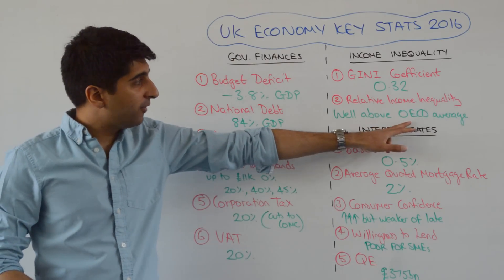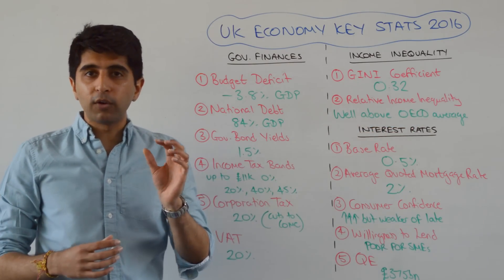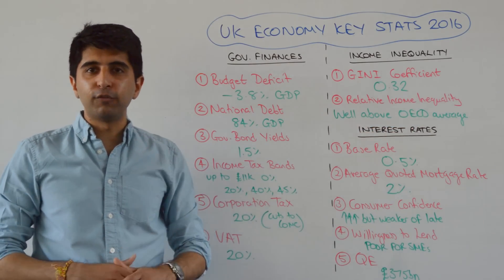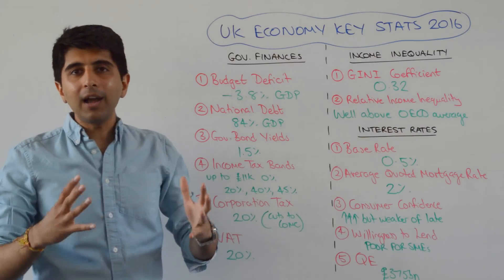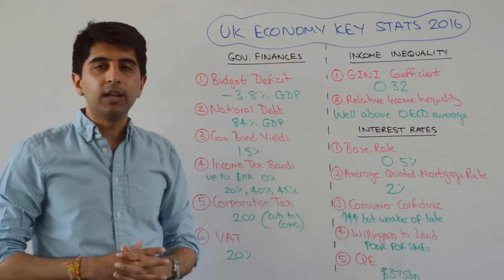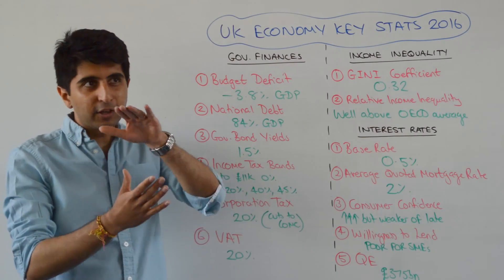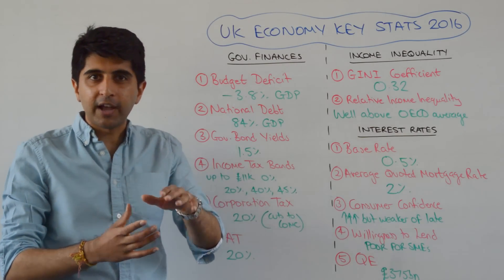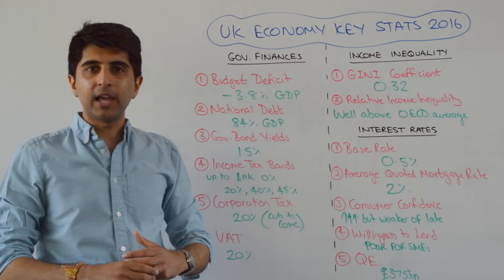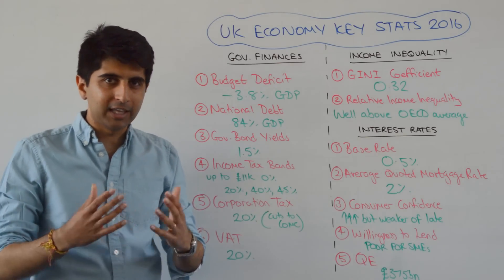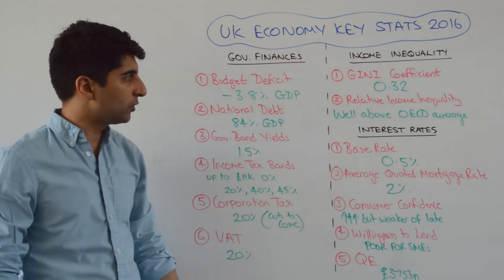On top of that, in the G7, we are one of the worst-performing nations when it comes to the distribution of income — a highly unequal economy. Especially the North-South divide: London compared to the rest of the UK, there is significant income inequality there. Not a good thing at all.